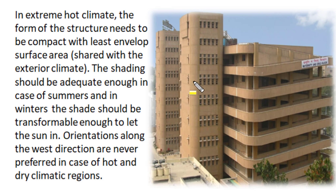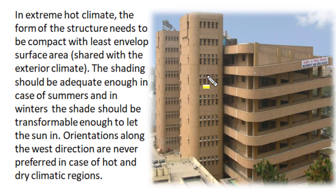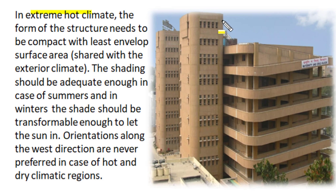These trees and shrubs also provide clean filtered air, temperature conditioning, and oxygen. In extreme hot and dry climates, the form of the structure needs to be compact with the least envelope surface area shared with external surroundings. Appropriate shadings should handle summer solar radiations of higher inclination, especially on the southern and western sides. In winter, these shadings will not stop the lower-angled solar radiation, letting the sun in. Therefore, in extreme hot climates, fenestration in the west direction is never preferred, and fenestration on the north side is the best.